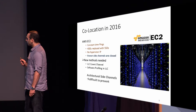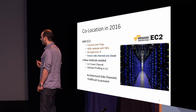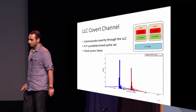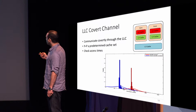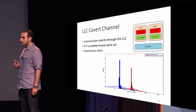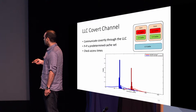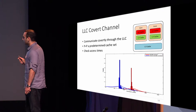The first method is a last-level cache covert channel. The last-level cache is shared between cores, so using this covert channel we can communicate with VMs running on different cores. In most Intel CPUs, each core has its own private L1 and L2 cache, and they share an L3 cache. By using Prime+Probe on predetermined cache sets, different co-located VMs on the same machine can create a covert channel. The histogram here shows last-level cache access times versus memory access times — there is a clear distinction between the two that we can use to communicate between VMs.